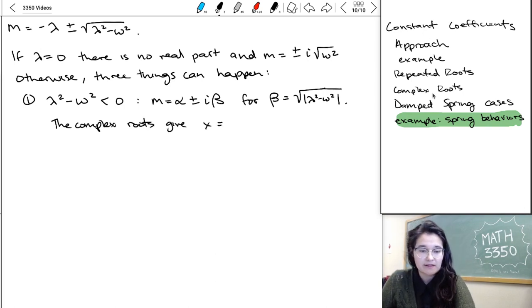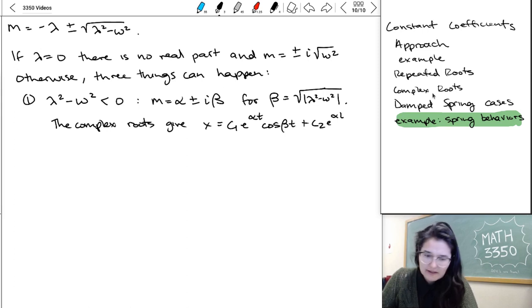And then that means that we have those complex roots. So x is going to take on solutions that look like c1 e to alpha t cosine beta t, plus c2 e to alpha t sine beta t.